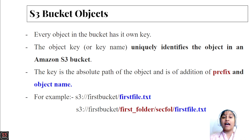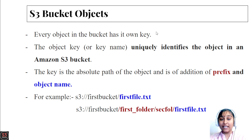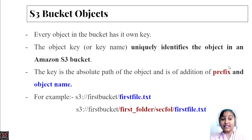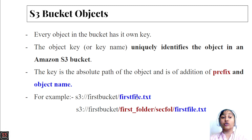Now let's talk about S3 objects. We create a bucket and upload files into it — all those files are referred to as objects. Every object in the bucket has its own key, and the object key uniquely identifies the object in an Amazon S3 bucket. The key is the absolute path of the object and is a combination of a prefix and the object name.